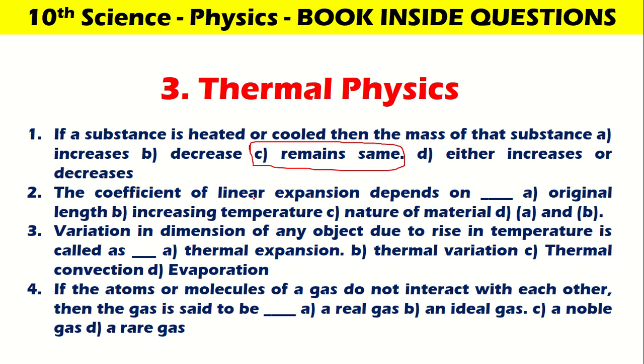The coefficient of linear expansion depends on original length, increasing length, temperature, nature of material - so D, A and B is the correct answer. Variation in dimension of any object due to rise in temperature is called thermal expansion. If the atoms or molecules of gas do not interact with each other, then the gas is ideal gas.